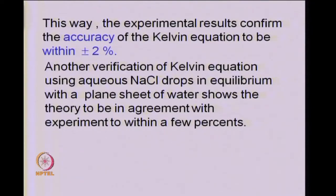The experimental results bear out the Kelvin equation to be accurate to within ±2%, which is very good accuracy. In another independent approach, the Kelvin equation was verified using aqueous sodium chloride droplets in equilibrium with a plain sheet of water. Once again those measurements reveal the theory to be in agreement with experiment to within a few percent, confirming the basic soundness of the Kelvin equation.